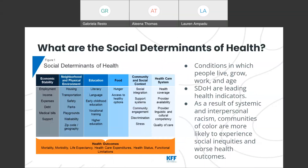We'll start by explaining what are the social determinants of health. Social determinants of health are conditions in which people live, grow, work, and age. These conditions are health indicators that greatly impact a person's life and are comprised of economic stability, neighborhood and physical environment, education, food, community and social context, and health care systems. As you can see in the diagram, all these factors lead to our health outcomes, our health status, our limitations, our life expectancy, and more.